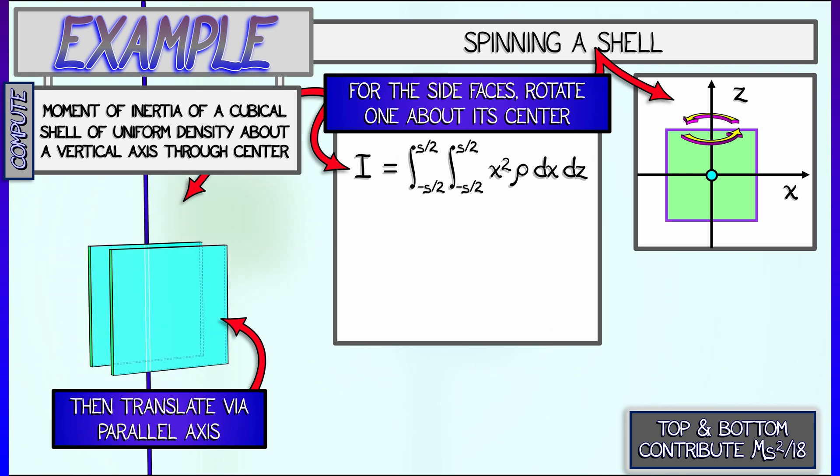Now the distance to the axis of rotation, r, is simply x. That means r squared is x squared, and we have to integrate x squared ρ dx dz as x and z go from minus s over 2 to plus s over 2.